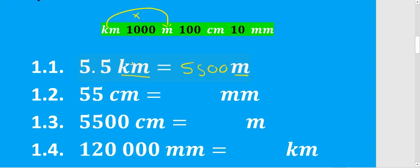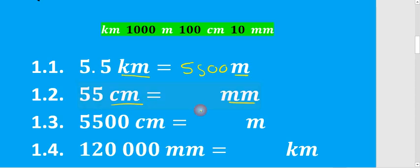For 1.2 we want to convert centimeters to millimeters. We're going forward so we're going to multiply by 10. 55 × 10 is 550.